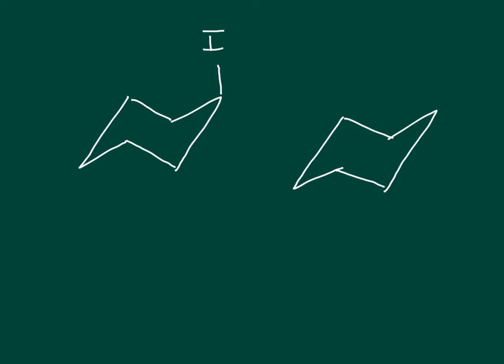Now, with the chair flip, what happens is, here we have our iodine atom, and it's in an up axial position. And I'll just put ax to save the time. Now, during the chair flip, it's going to keep its up definition, but it's going to switch from axial to equatorial.